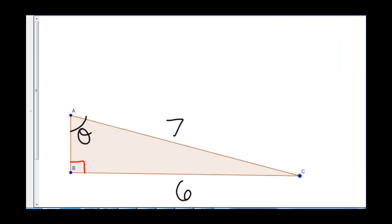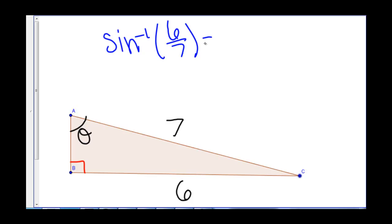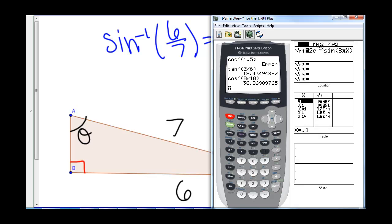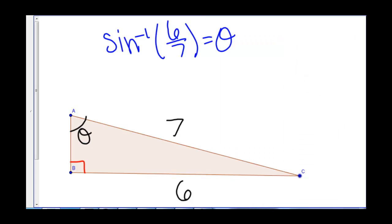Let's have you try this one: use inverse trig to find theta. This time we have opposite over hypotenuse, so we use inverse sine of opposite over hypotenuse. The inverse sine of 6 divided by 7 rounds up to 59.00 degrees.